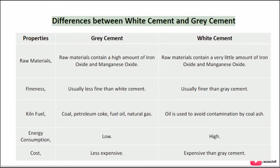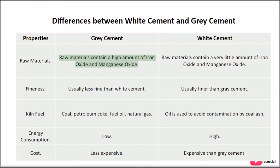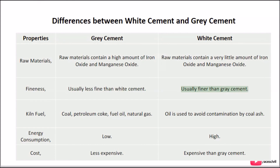Differences between White Cement and Grey Cement — Properties: Regarding raw materials, grey cement contains a high amount of iron oxide and manganese oxide, while white cement contains a very little amount of iron oxide and manganese oxide. Regarding fineness, grey cement is usually less fine than white cement, while white cement is usually finer than grey cement.